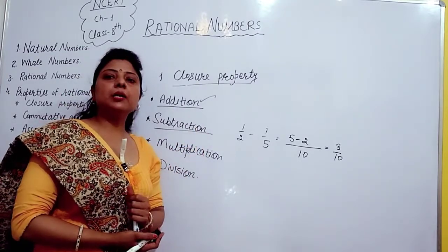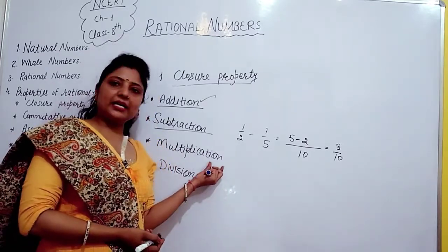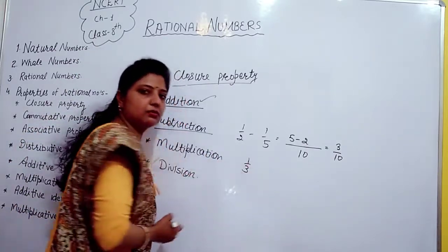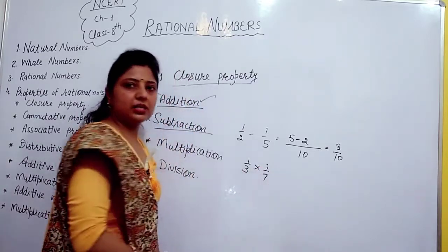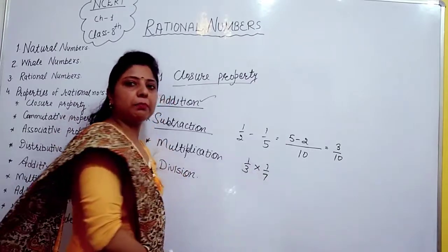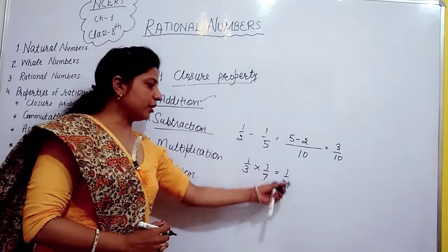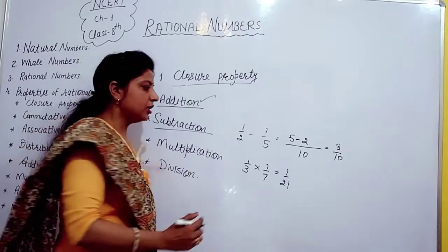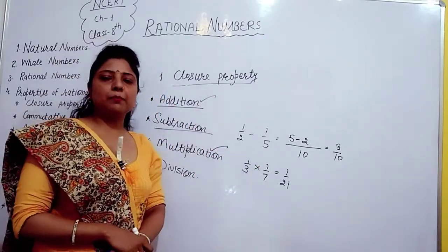Next we discuss multiplication. If we multiply two rational numbers we get a rational number. First rational number is 1/3 and second is 1/7. The result is 1/21, which is also a rational number. So closure property holds on multiplication also.